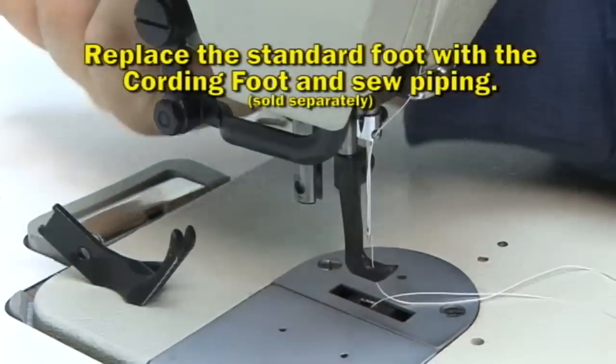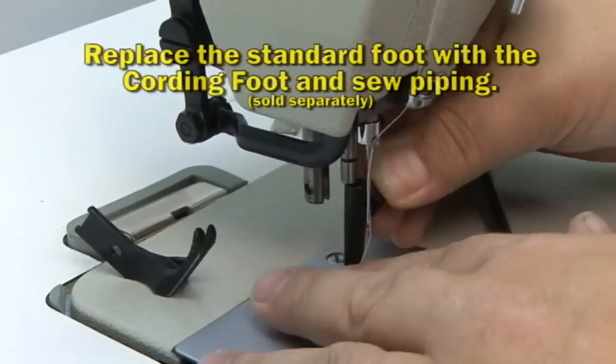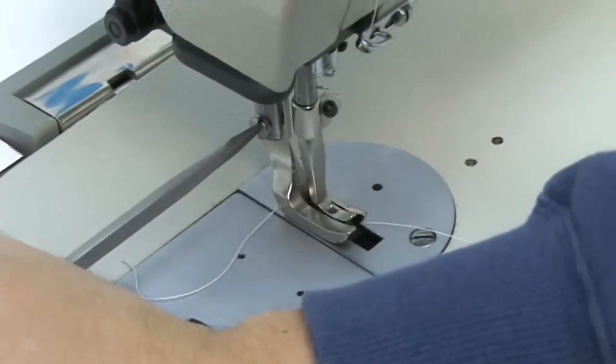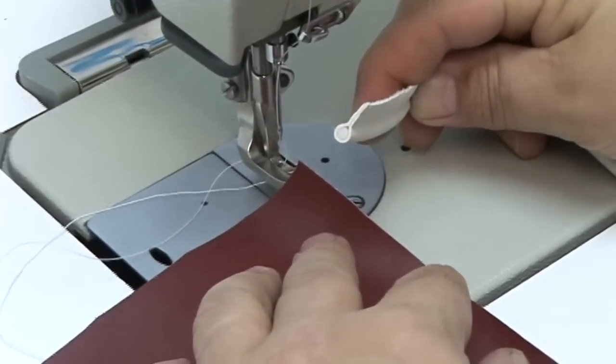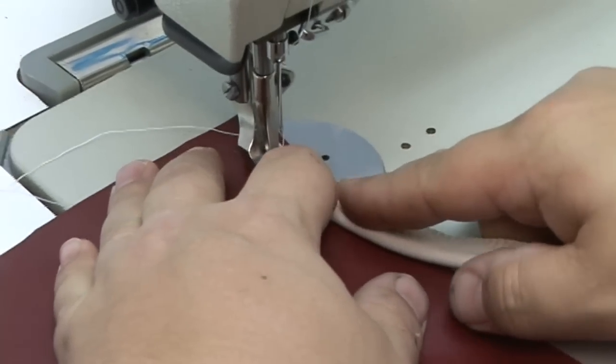Remove the standard foot that comes with the machine and install a cording foot and you're ready to do piping and welting. Sailrite sells many different colors of vinyl piping. You can also make your own using this cording foot.